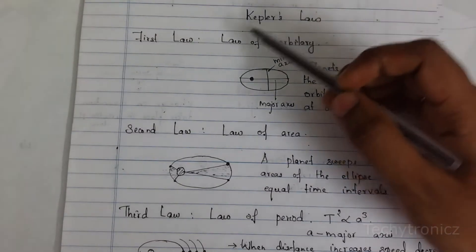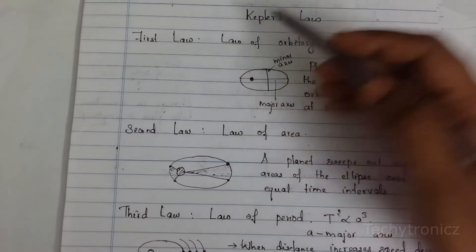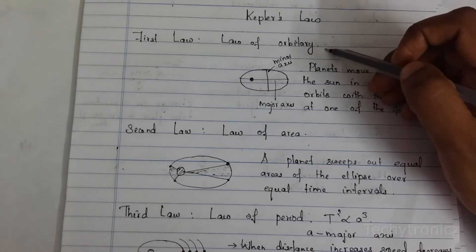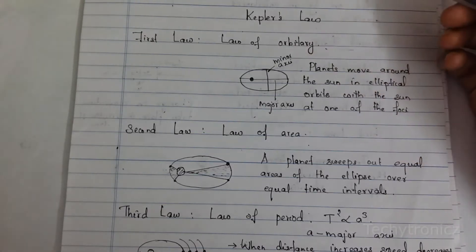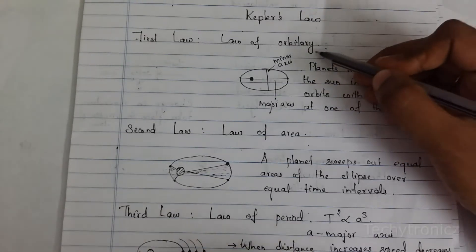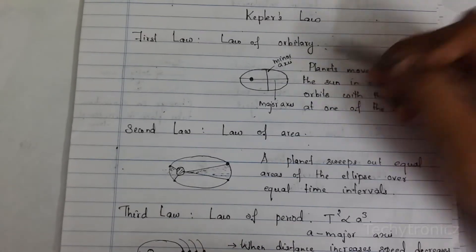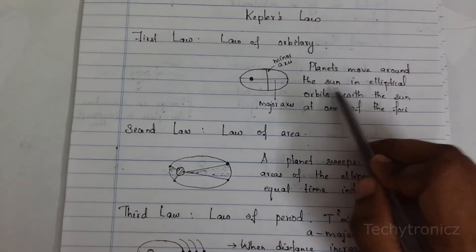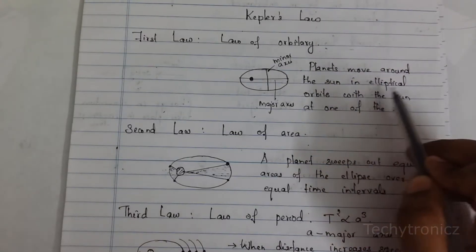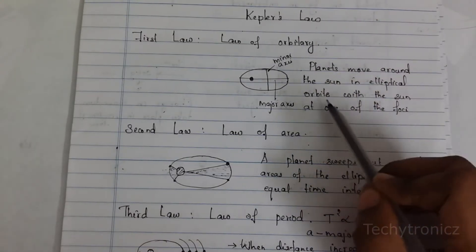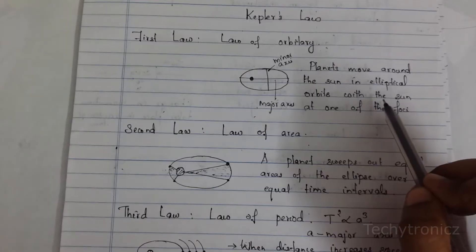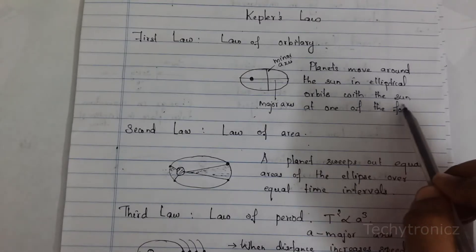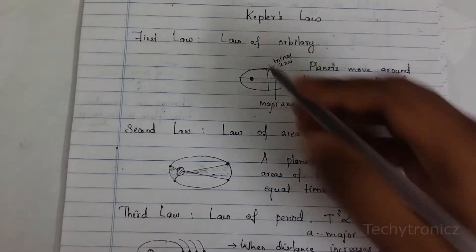So the first law — law of orbits — means the planets move around the sun in elliptical orbits with the sun at one of the foci.